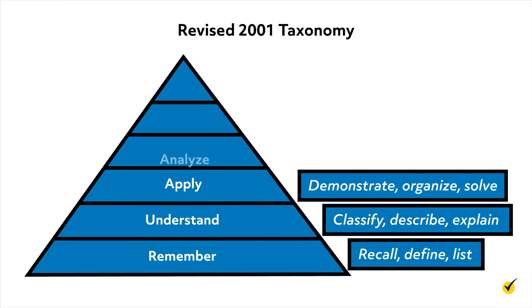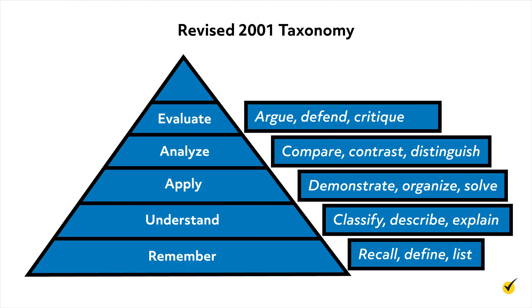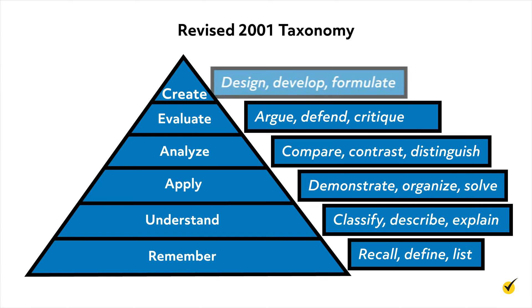The analyze level focuses on relationships among ideas. Verbs include compare, contrast, and distinguish. The evaluate level focuses on justifying decisions. Verbs include argue, defend, and critique. Create, now the highest level of the taxonomy, involves producing original work. Verbs include design, develop, and formulate.